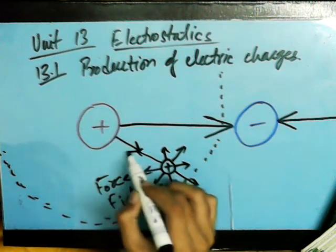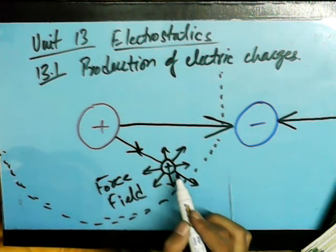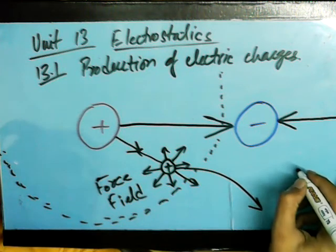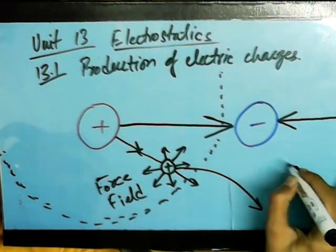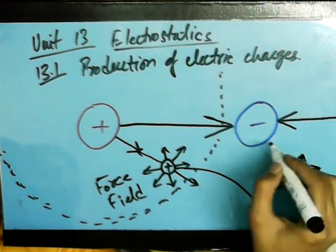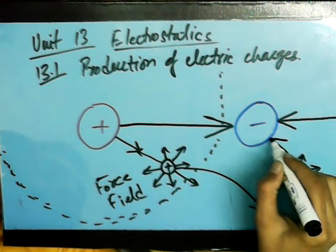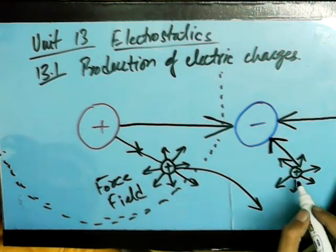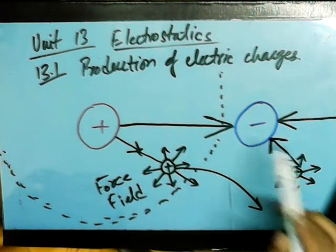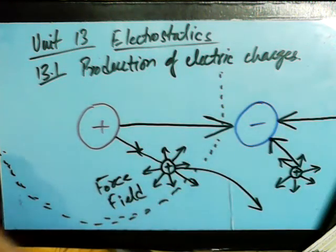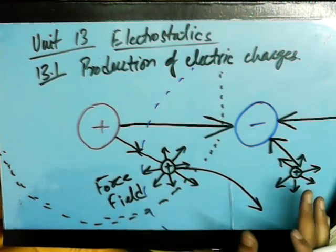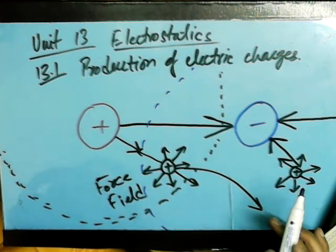The bigger positive charge, since it's more powerful, will repel the small charge to move away from its field. On the other hand, if we bring a point positive charge towards the negative one, being oppositely charged there will be attraction, and the positive charge will get attracted towards the negative charge. Since the bigger charge is more powerful, the smaller charge will get attracted towards it. The negative charge is also going to have its own force field — it can be bigger or smaller, depending on how strong the force is or how big the charge is.